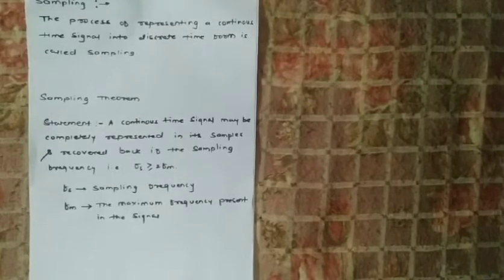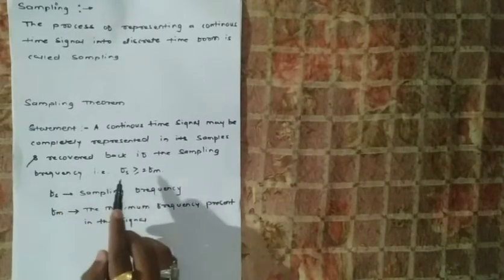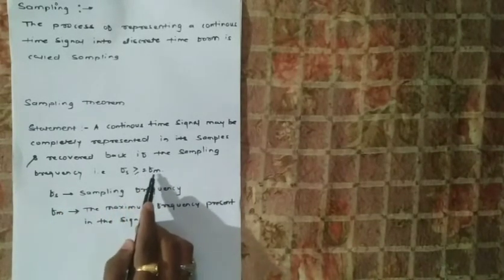In order to prove how we can convert a continuous time signal into discrete time, we'll look at the sampling theorem. The statement is: a continuous time signal may be completely represented in its samples and recovered back — that means a discrete time signal can be again represented in continuous time form — if the sampling frequency fs is greater than or equal to two times fm. Here fs is the sampling frequency, the rate at which we are sampling the continuous time signal, and fm is the maximum frequency present in the given signal.